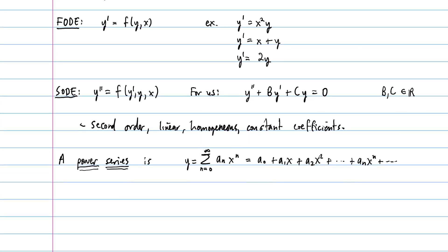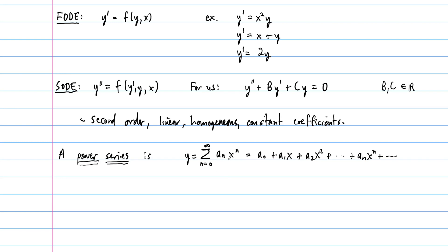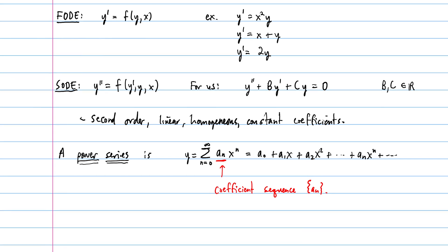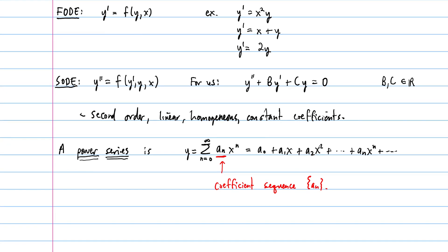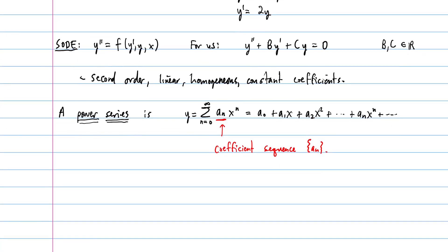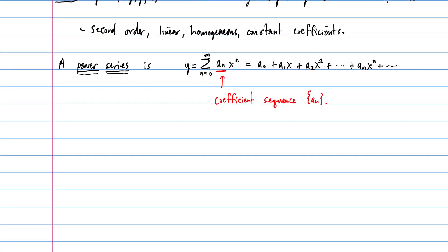The key is that to know the power series, we just have to know the coefficient sequence a sub n. If we can describe the coefficient sequence, then we will know the power series completely. Because a power series is a lot like a polynomial, we can do all the calculus we're used to doing with polynomials — we can take derivatives.